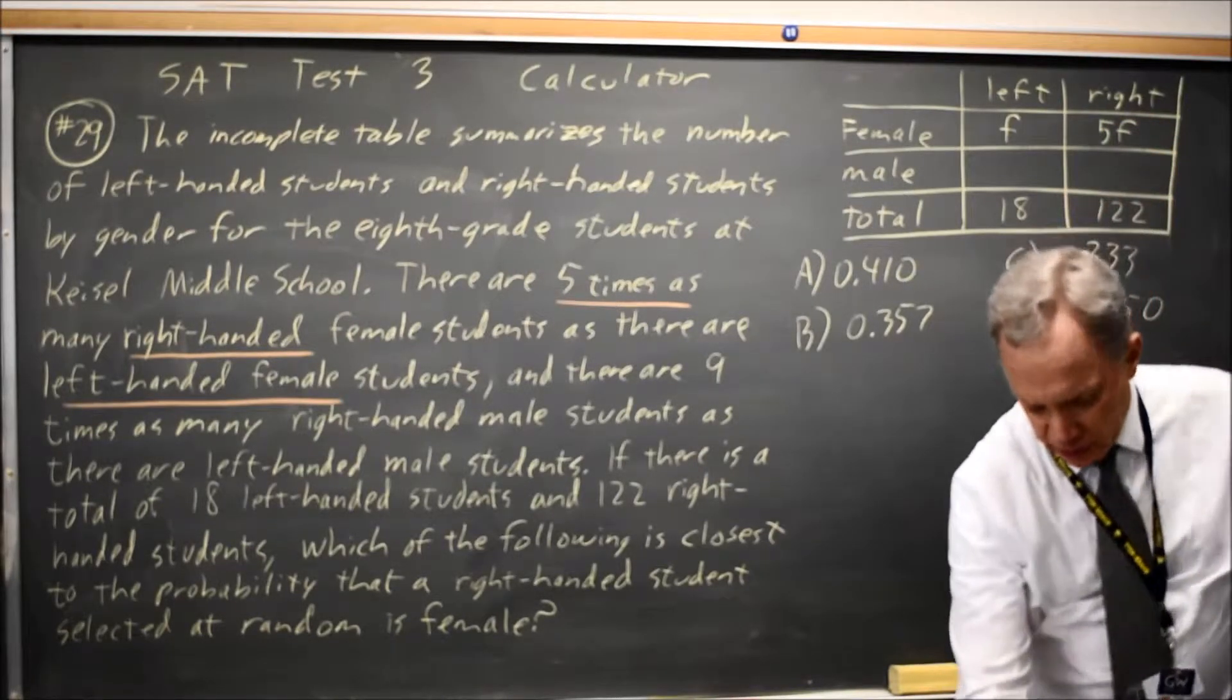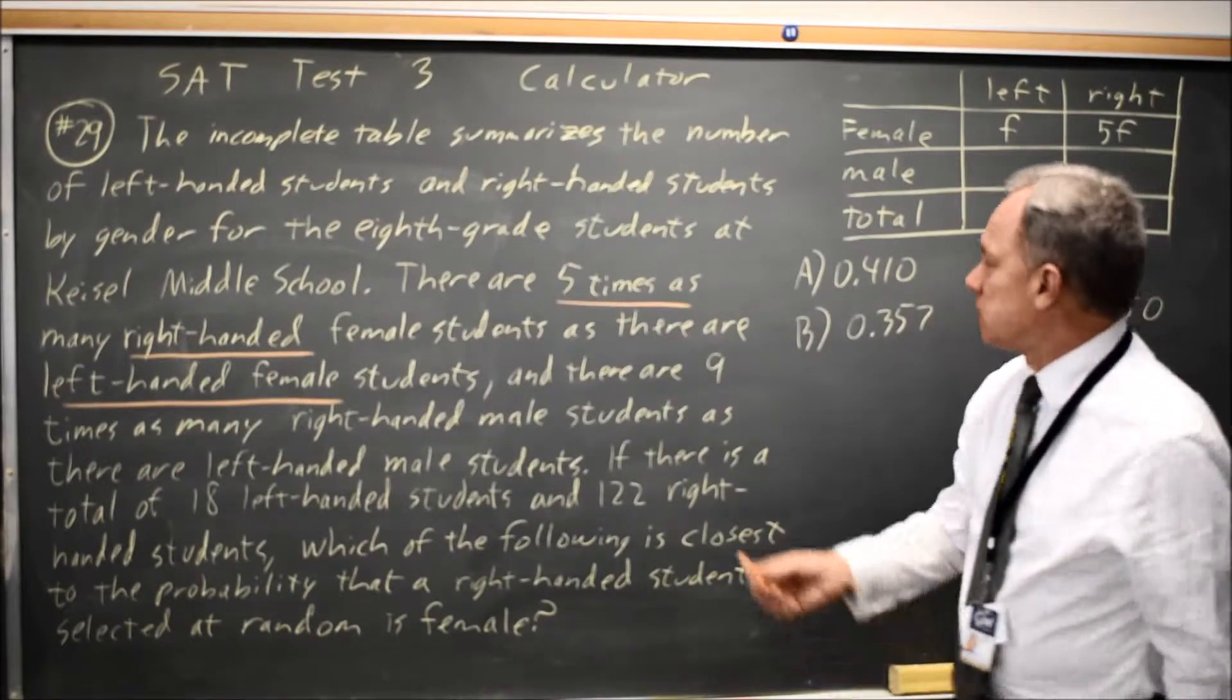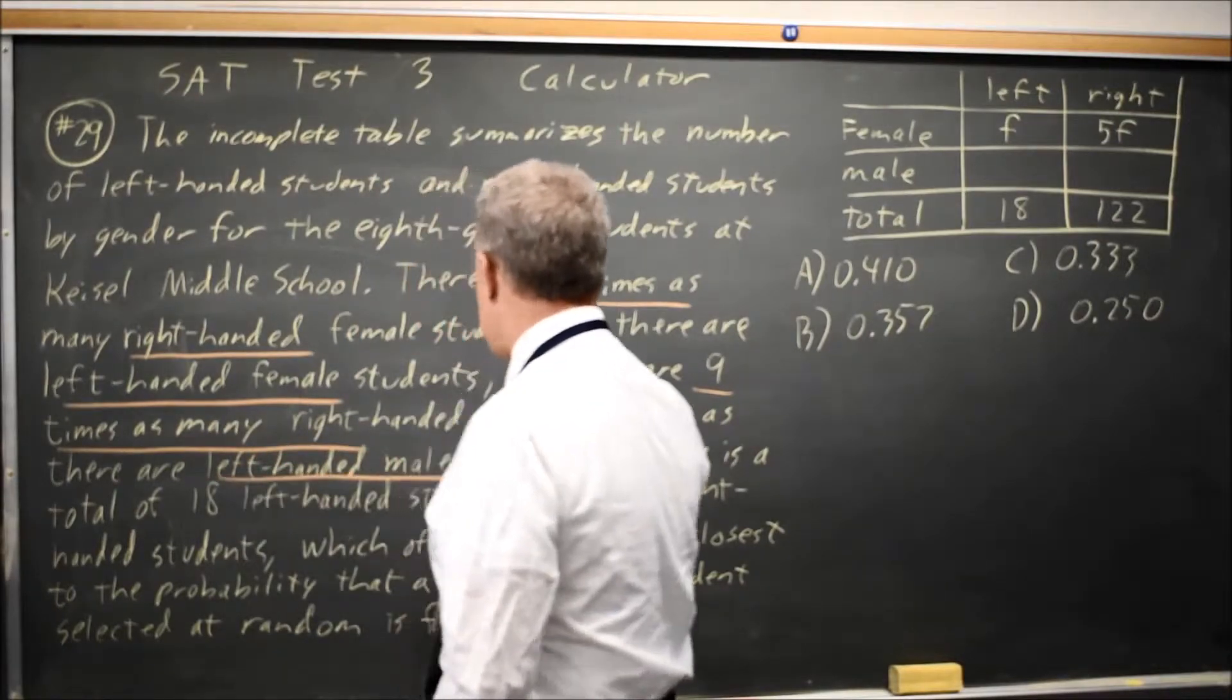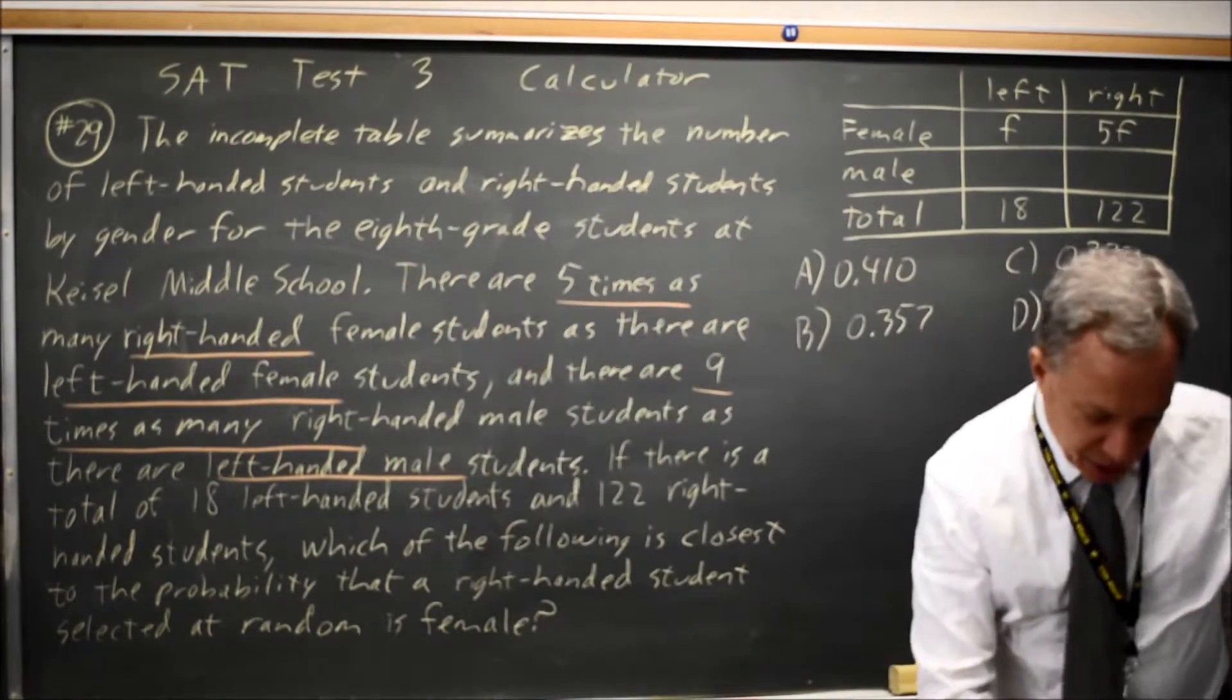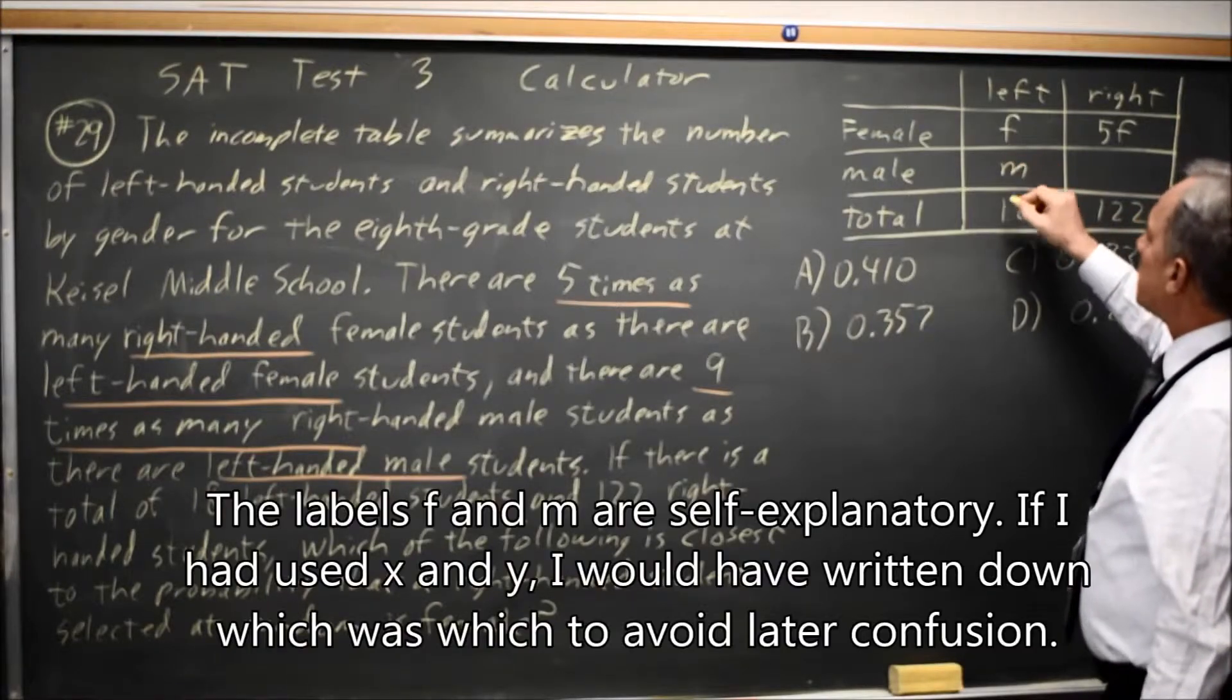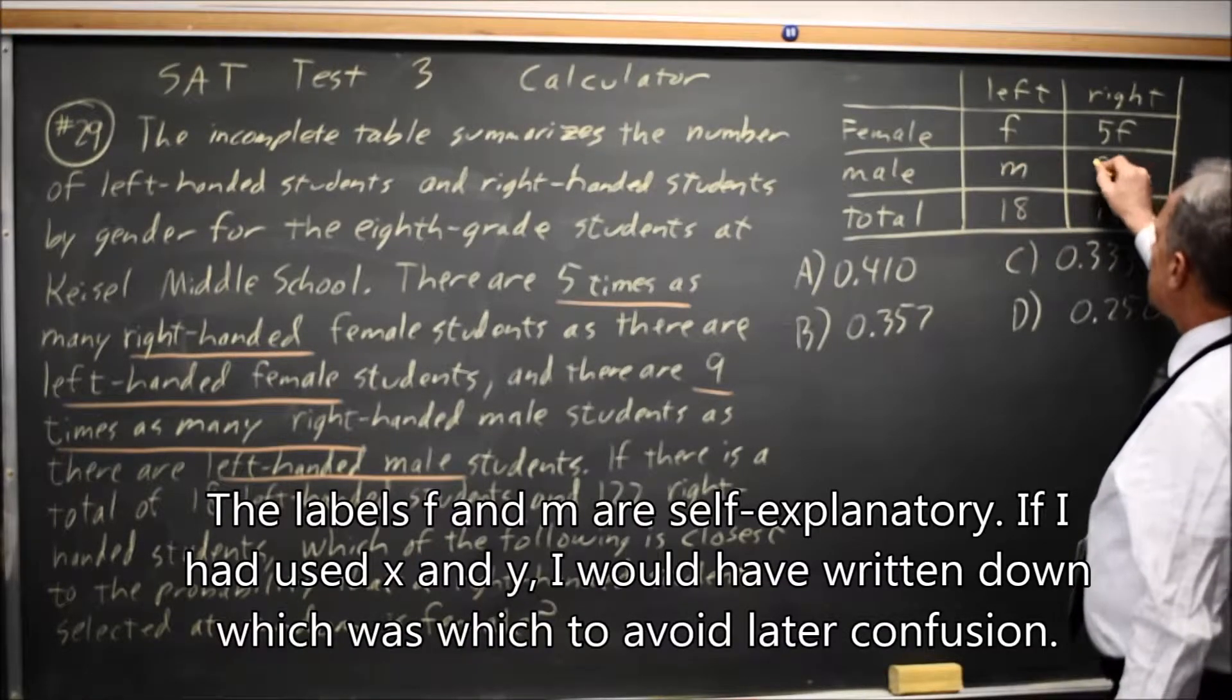Now for males, we are told there is nine times as many right-handed males as there are left-handed males. So I'm going to call the number of left-handed males M, and the number of right-handed 9M.